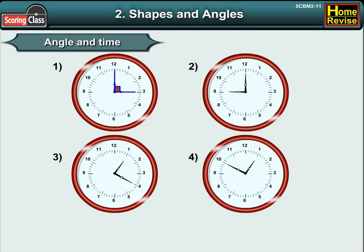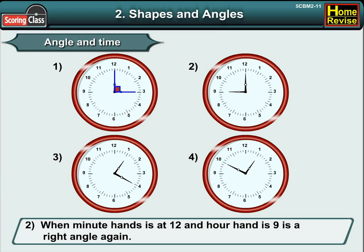Then the clock hands are making a right angle again. When the minute hand is at 12 and hour hand is at 9, you know what it makes? Yes, it makes the right angle again.